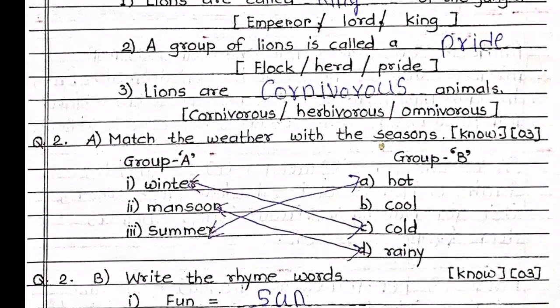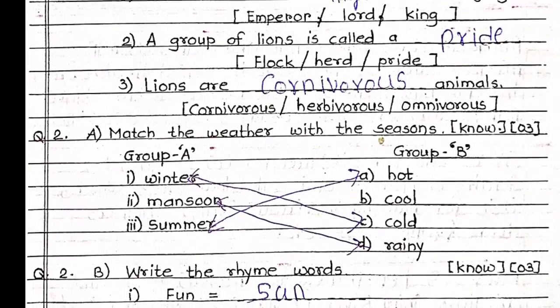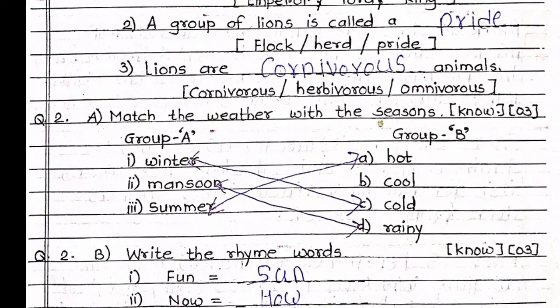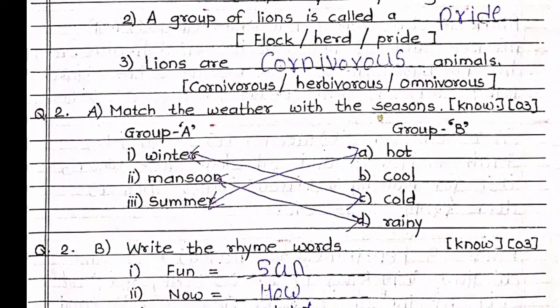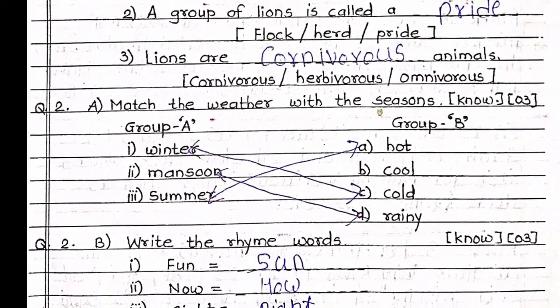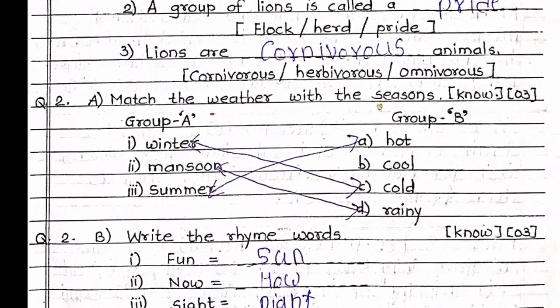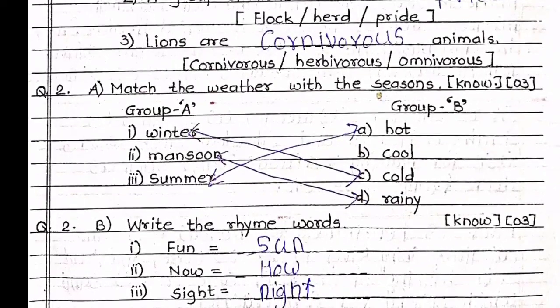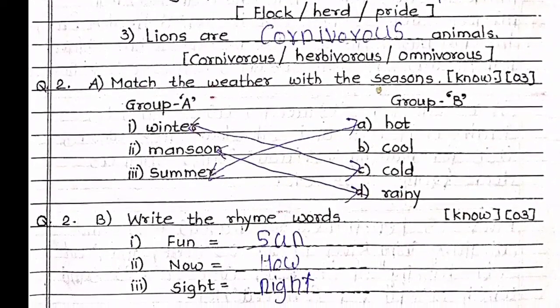Question 2B: Write the rhyme words. Fun — Sun. Now — How. Sight — Night.